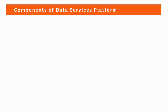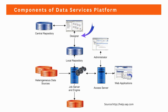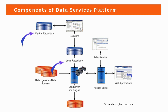Let's now talk about some key components of SAP Data Services. We have a designer — it's a tool where developers create, test, and execute jobs. We have a job server, which is an application that launches the data services processing engine and serves as a user interface to the engine. We have an engine that executes the individual jobs. We also have a repository, both central and local, an access server, and an administrator tool for scheduling, monitoring, and executing batch jobs.